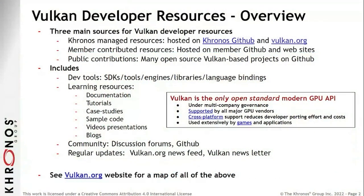There are kind of three sources for resources that we use and promote for Vulkan developers. A lot of them are managed by Khronos itself — we do all the work on the spec itself, and we have several GitHub accounts available to the public for the various tools that you need. There are also member-contributed sources like the IHVs, ISVs, and OSVs, as well as public contributions from the general public. These things include all of the basic SDKs and developer tools, learning resources, community, newsletters, and ways to find information.